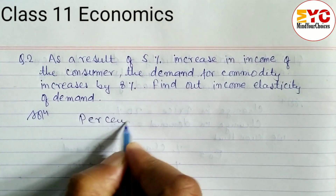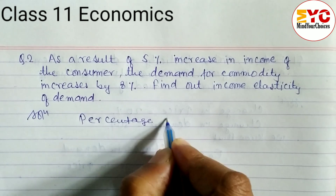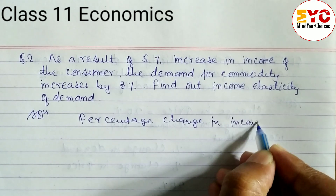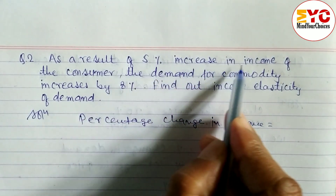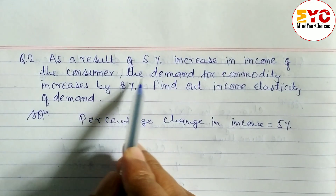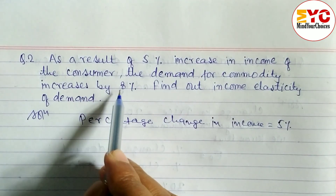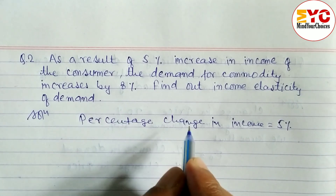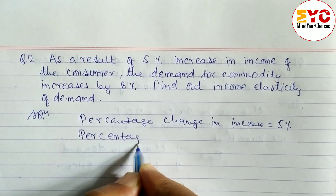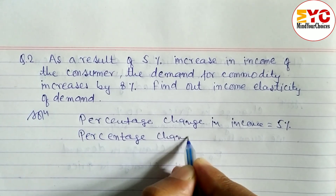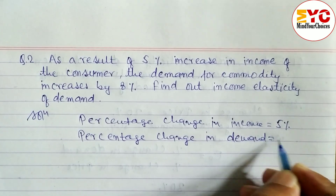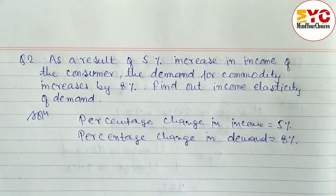We write down the given values: percentage change in income is 5%, and the percentage change in demand is 8%.